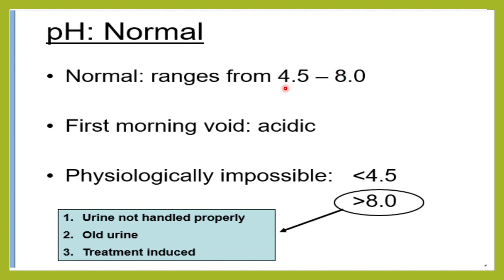The first morning urine that we void is usually concentrated and acidic. If the urine pH is coming less than 4.5 — for example, 4 — then you should think that it is not possible for it to be a valid urine sample.